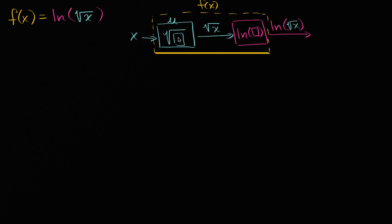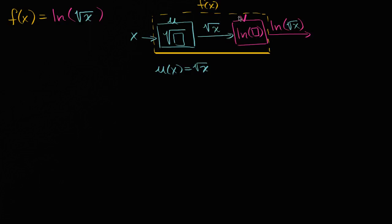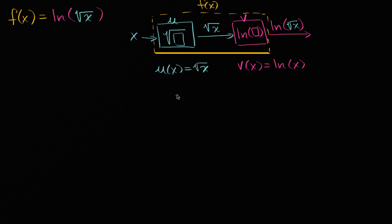You could have a function u here which takes the square root of whatever is input. So u(x) = √x. Then you take that output and input it into another function we could call v. What does v do? It takes the natural log of whatever the input is. In this case, the input happens to be √x, so it outputs ln(√x). If we write v with x as an input, that's just v(x) = ln(x). And as you can see, f(x) = ln(√x), which is v(√x), or v(u(x)).